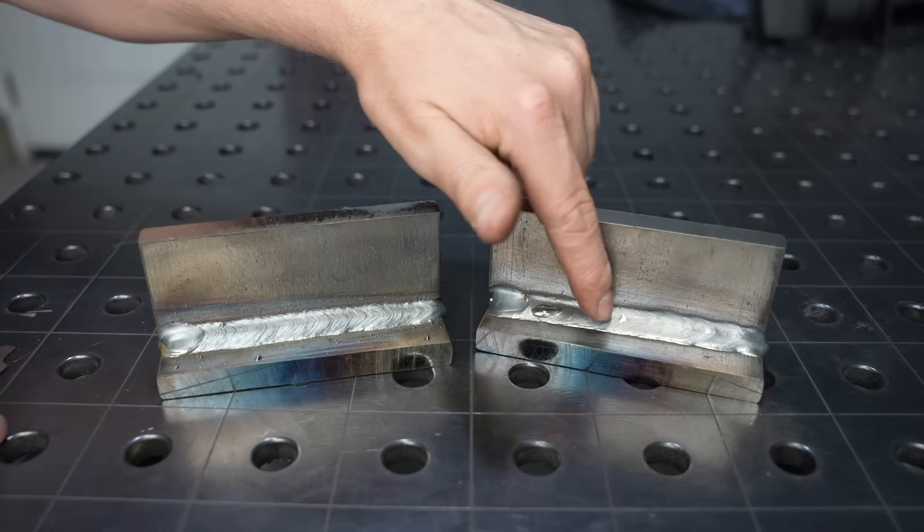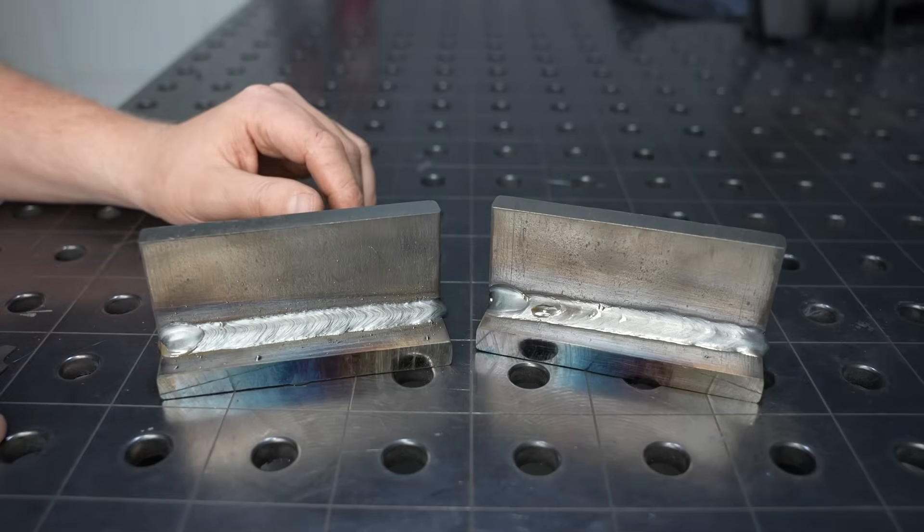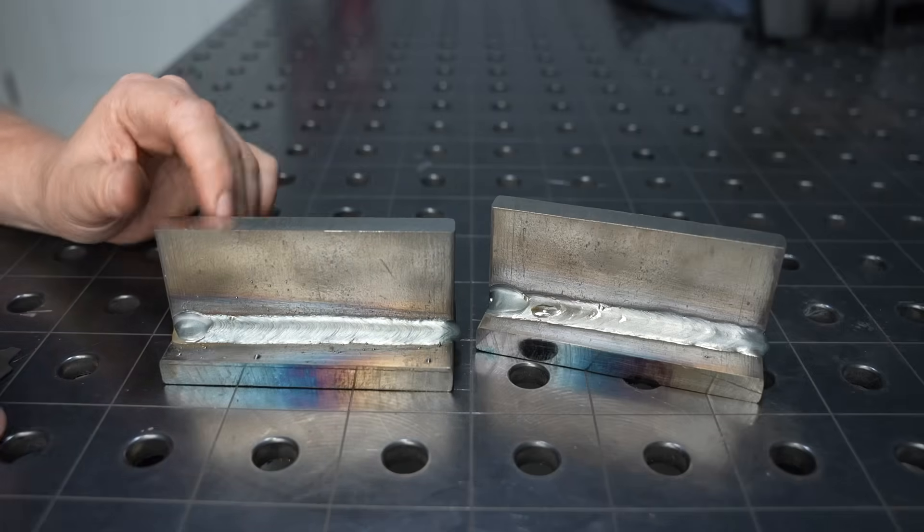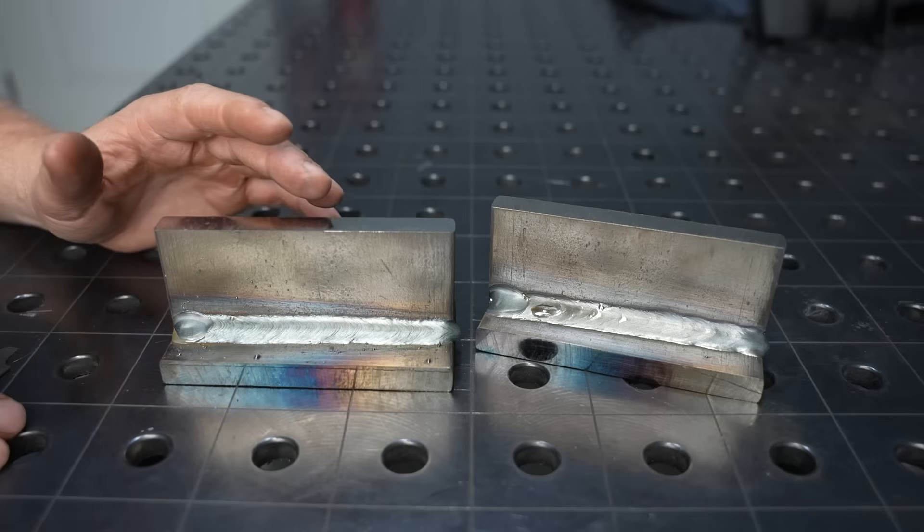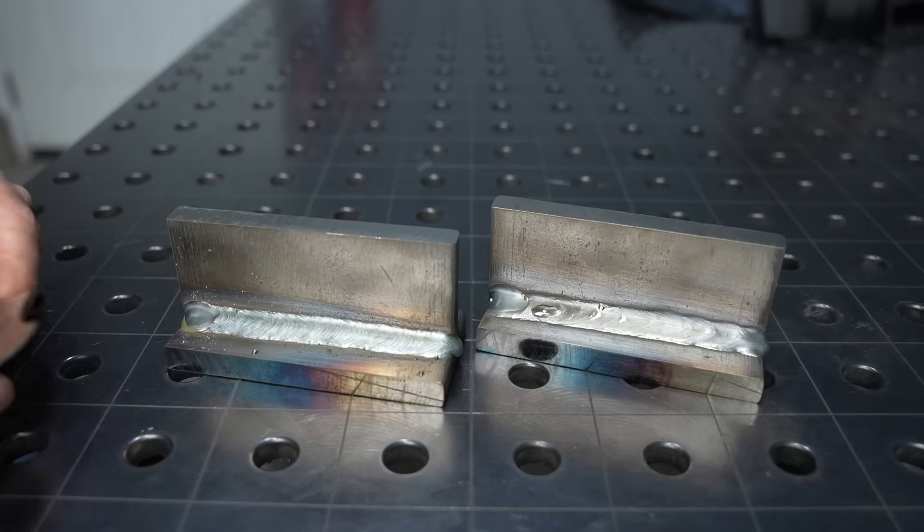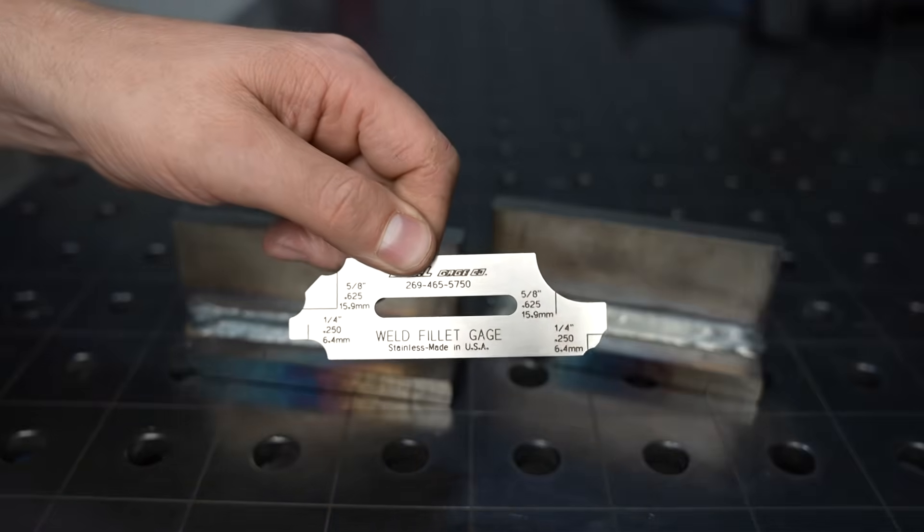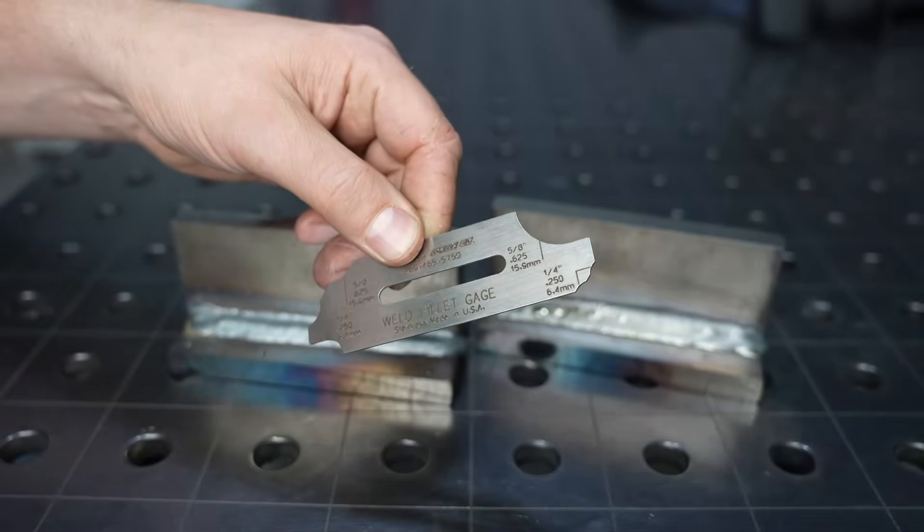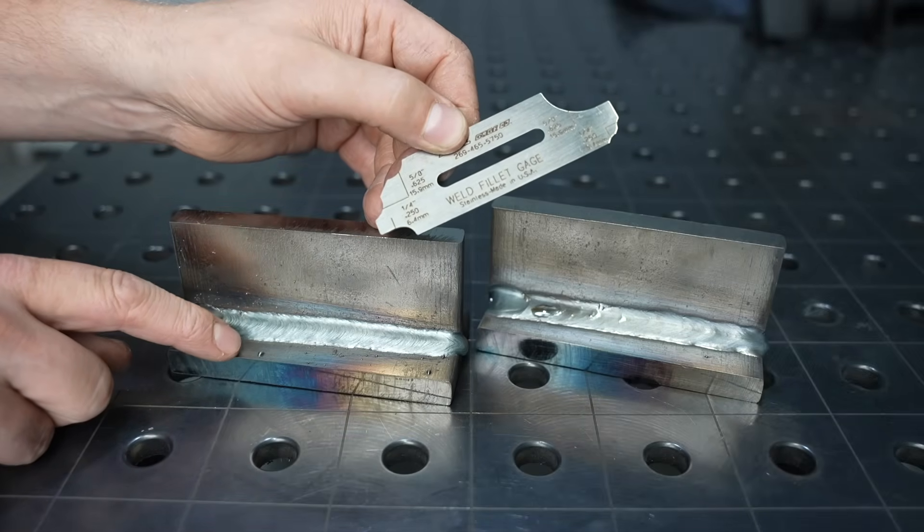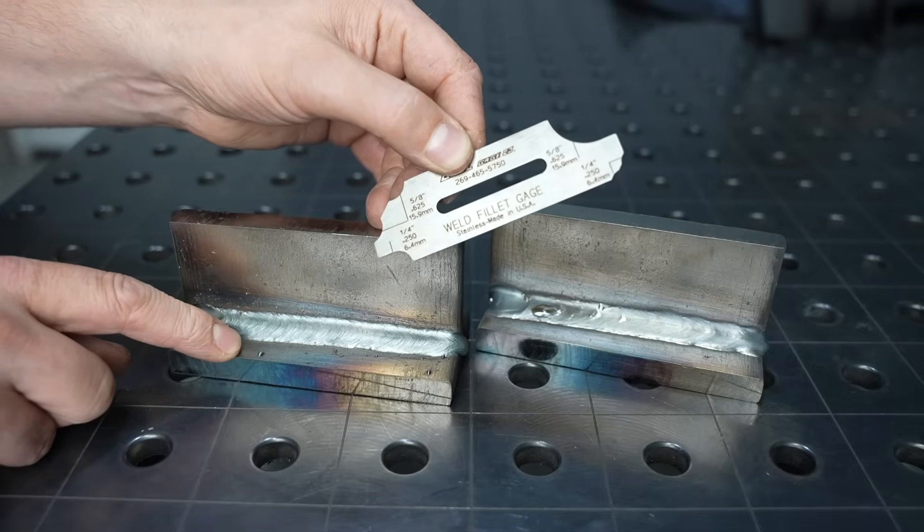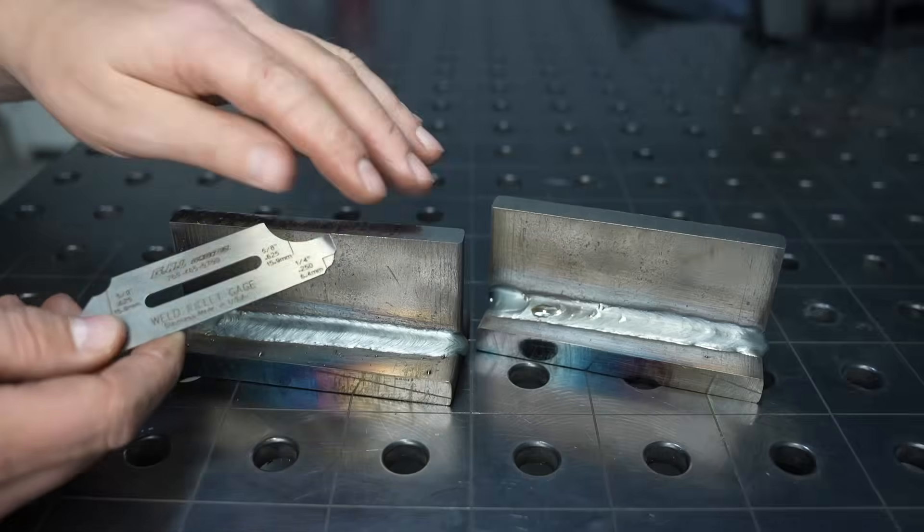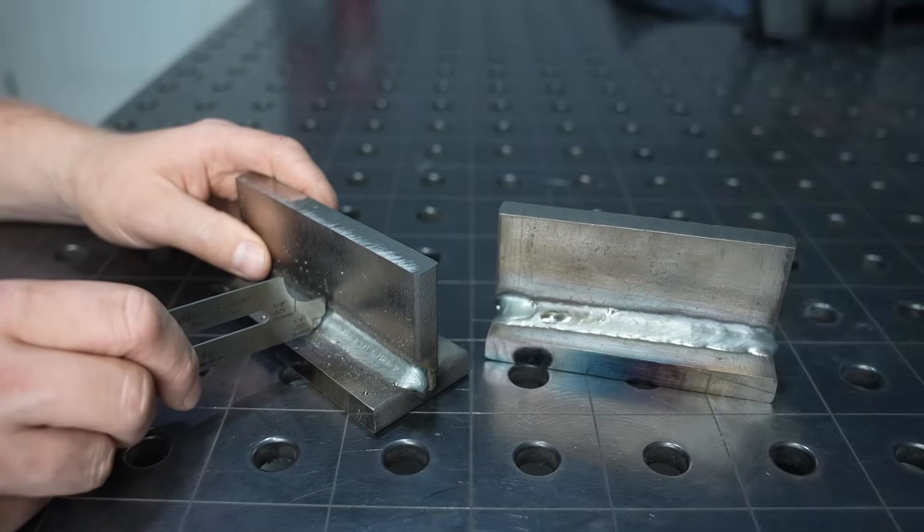Now let's take a look at the weld size. I was shooting for a quarter-inch fillet. The size of fillet weld you need depends on a lot of things—the design of the joint, how it's loaded and whatnot—but I'm looking for a quarter-inch fillet weld here. This is a fillet weld gauge and it has two different sides. One side right here is to check the leg length, or how far the corner is from that other plate, and then it also has a side here to check the throat in case it's a concave weld.